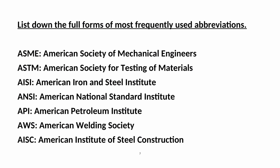List of frequently used abbreviations: ASME — American Society of Mechanical Engineers; ASTM — American Society for Testing of Materials; AISI — American Iron and Steel Institute; ANSI — American National Standard Institute; API — American Petroleum Institute; AWS — American Welding Society; AISC — American Institute of Steel Construction.